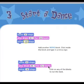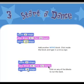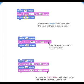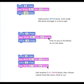On to number three, start a dance. Add another move block. Click inside the block and type a minus sign. Click on any of the blocks to run the stack. Add another play drum block, then choose a drum from the menu. Click to run.